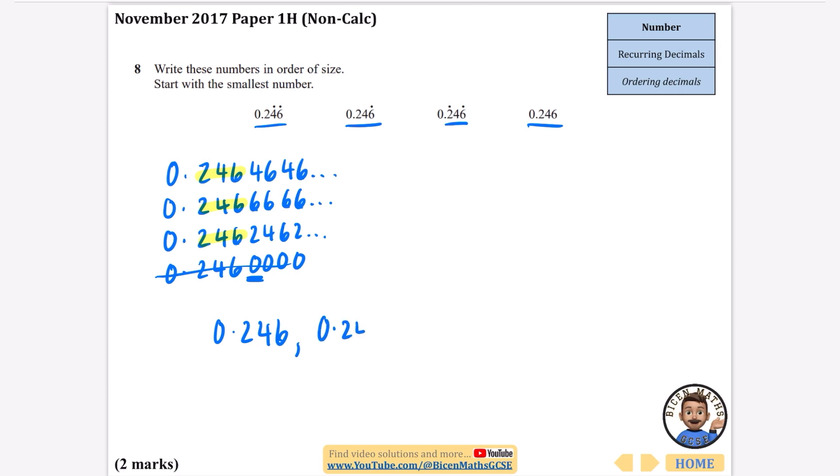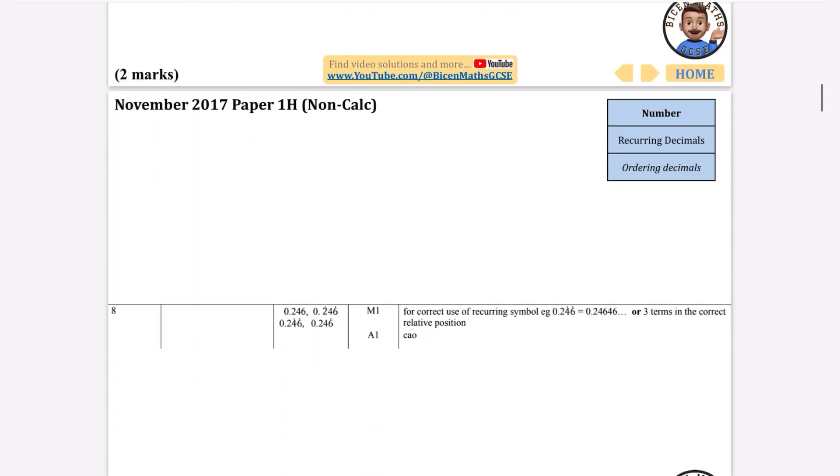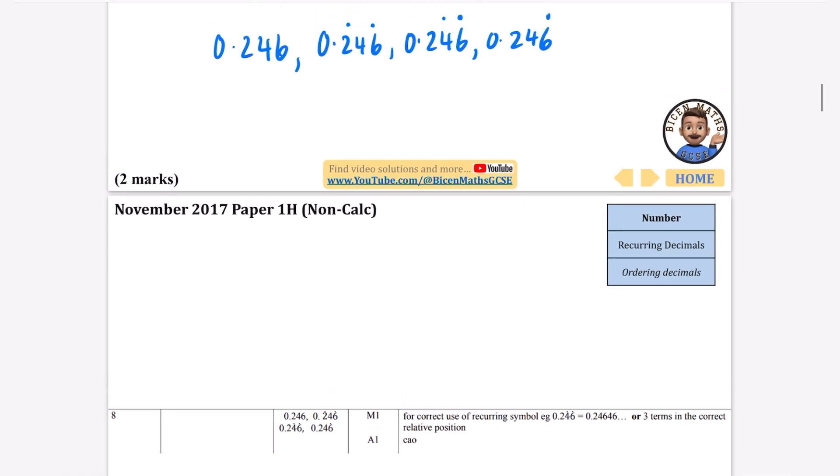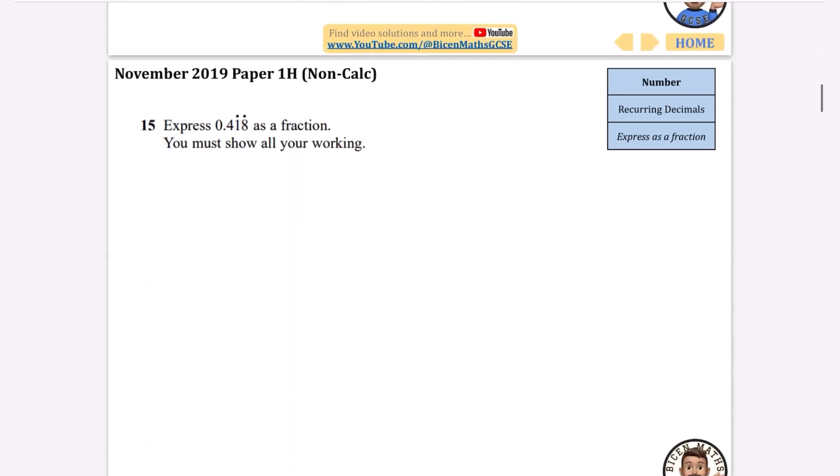Looking at these numbers, they all have the same start point, so we just need to compare what comes next. It's going to be the third one that comes next, which is 0.246 recurring. Then the first one which has the four in position, which is 0.246 with the dot above the four and six. Then the last one is 0.246 recurring. Writing them in that way is the best way to compare the decimals.